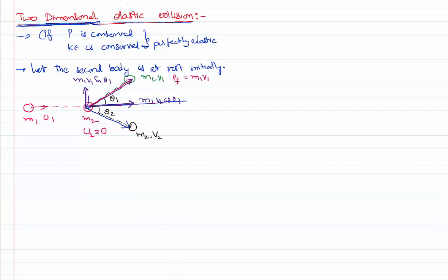For the second body, its momentum m2·v2 can also be resolved into components. The x-component is m2·v2·cos(theta 2) and the y-component is m2·v2·sin(theta 2). Since this momentum vector is also radially outward, both its components are radially outward. This is a basic requirement to understand any collision condition. Now, since momentum is conserved, we apply this along each axis.